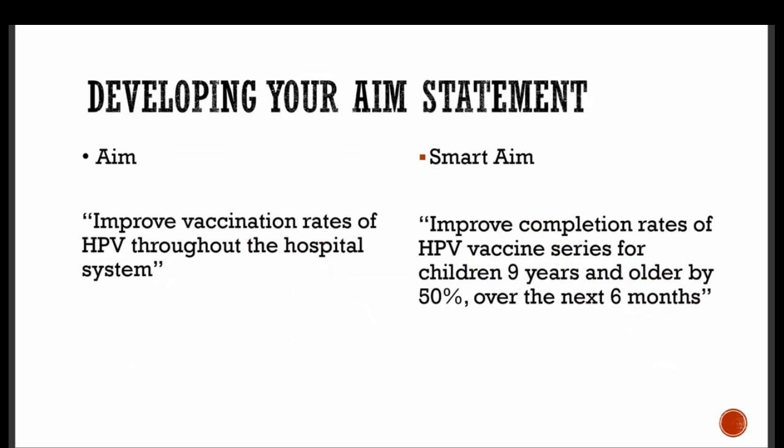When you develop your SMART aim, on the left-hand side is what I call your 'running for office' statement: 'improve vaccination rates of HPV throughout the hospital system.' It's nice and simple but means very little without quantifiable goals. A SMART aim example would be: 'We want to improve completion rates of HPV vaccine series for children nine years and older by 50% over the next six months.' That is specific, measurable, achievable, relevant to our practice, and time-bound at six months.